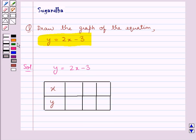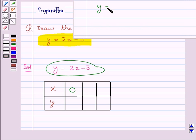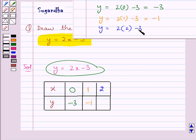For some values of x we will find the corresponding values for y. Like in this equation when we take x equal to 0, that is when we put x equal to 0 in this equation, we get minus 3 as the value for y. So we write minus 3 here. Now for x equal to 1 we get the value for y as minus 1. Then for x equal to 2 we get the value for y as 1.